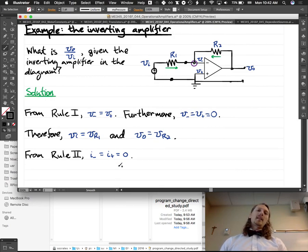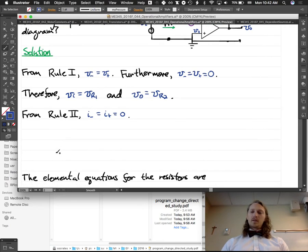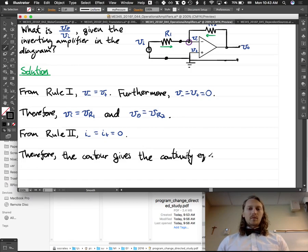From rule two, we're saying that the current draw from this side, in the inverting and non-inverting terminals, is zero. Right? So, if we write a continuity equation, from rule two, so there's no current draw. So, therefore, the contour, which I already drew in for us, let's look at this node here, the contour there. So, therefore, the contour gives the continuity equation.